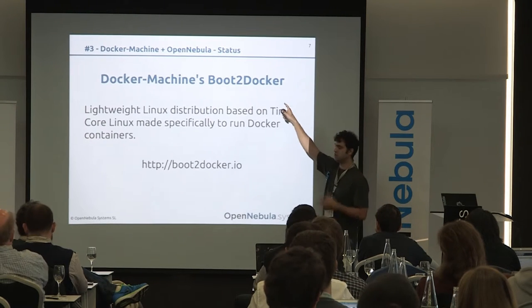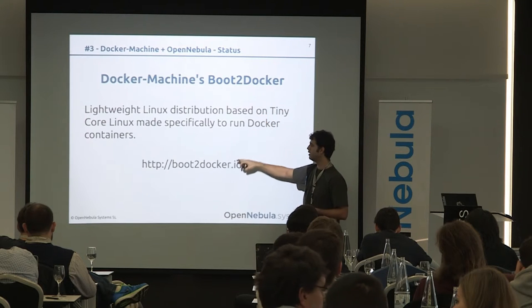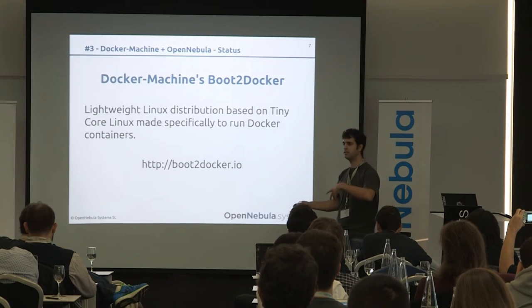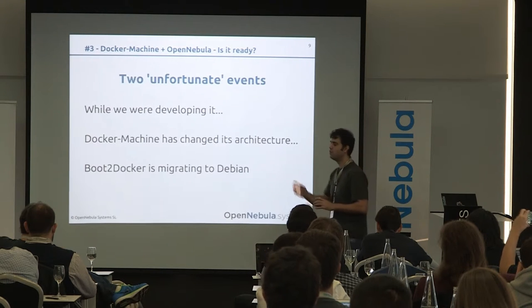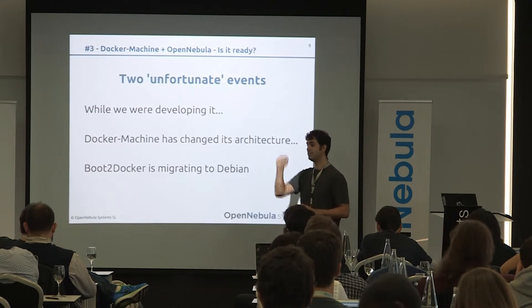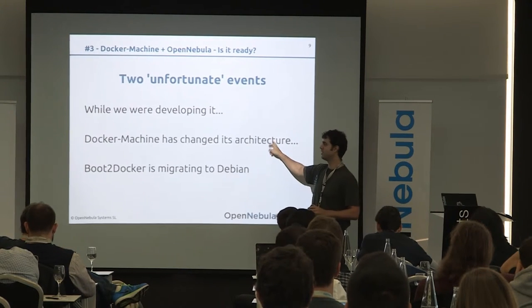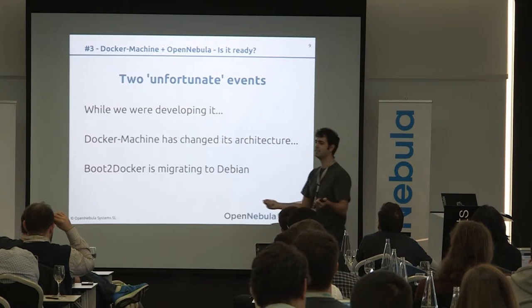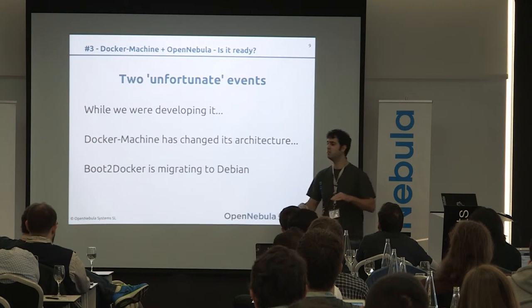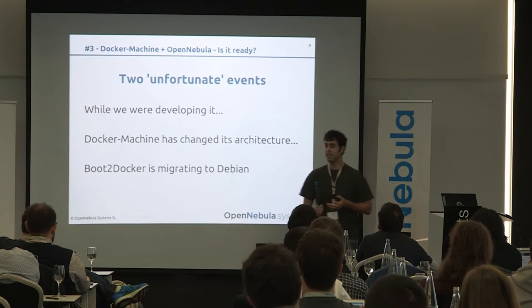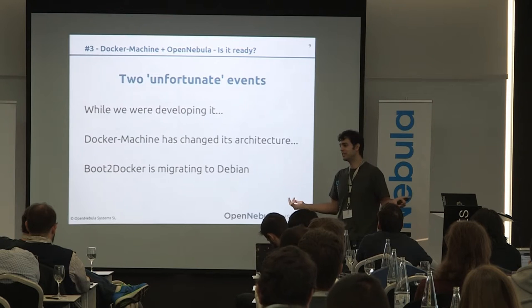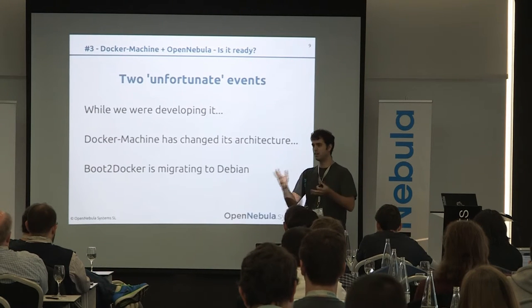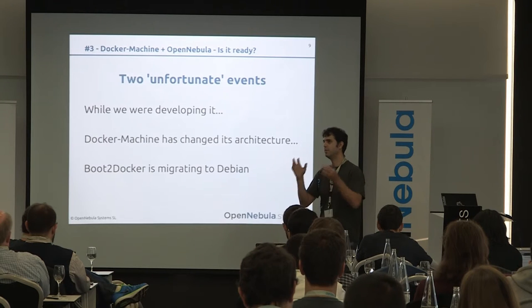We used boot2docker to integrate with Docker Machine, and it's based on Tiny Core Linux. We had used Tiny Core Linux in the past, so adding support for OpenNebula was a pull request that took us just two lines. However, on the day we started development, they announced they were changing the architecture of Docker Machine. It took us about a week to finish the integration, we submitted the pull request, and they told us they couldn't accept it because they were completely changing the architecture to be plugin-based. We're waiting for Docker Machine to stabilize so we can modify our code to become a proper Docker Machine plugin.